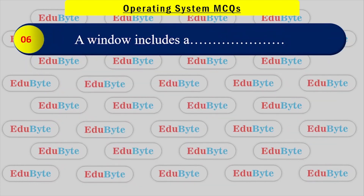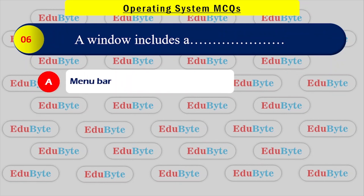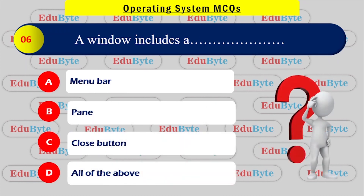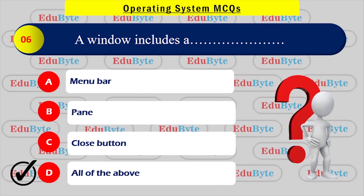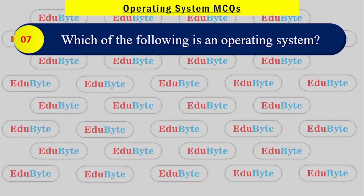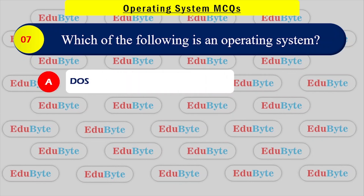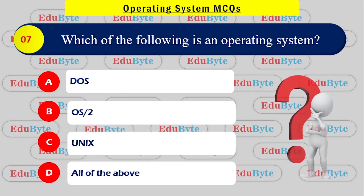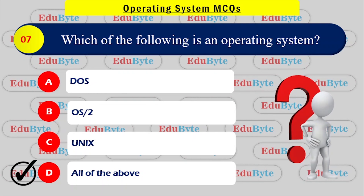Which of the following does a window include? Options: menu bar, pain, close button, all of the above. The correct answer is All of the above. Next, which of the following is a type of operating system? Options: DOS, OS/2, Unix, all of the above. The correct answer is All of the above.